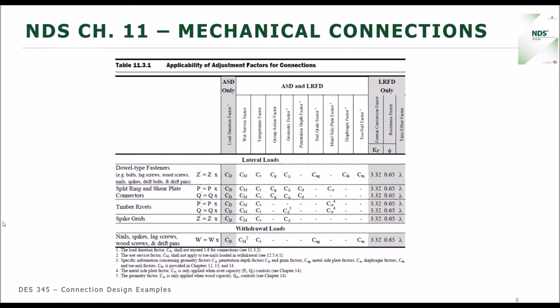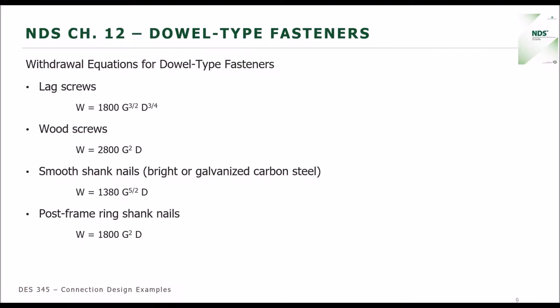When you go into Chapter 12, there is a listing of various equations for withdrawal for different dowel-type fasteners. All of these equations are different, which makes sense, but they are all going to be dependent upon two things: the specific gravity of the material that the connector is going into — the wood — and the diameter of the fastener. Those are the two important values for withdrawal capacity for any of these fasteners in Chapter 12.